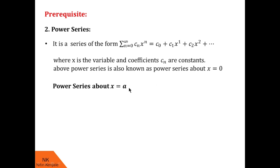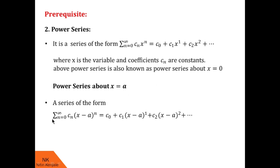Then the power series about point x = a is given by summation c_n into (x - a) raised to n, where n runs from 0 to infinity. When you expand this, you will see this infinite series is c_0 + c_1(x - a) + c_2(x - a)² and so on. This is a power series about point x = a, so it will have terms of the type (x - a)^n.